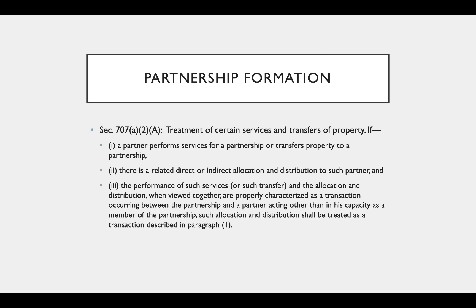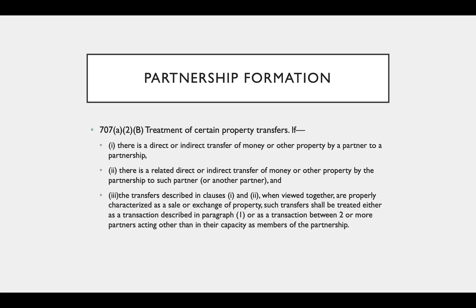Exception two is found in Section 707(a)(2)(A). The treatment of certain services and transfers of property will be taxable if a partner performs services for a partnership or transfers property to a partnership, there is a related direct or indirect allocation and distribution to such partner, and the performance of services or transfer and the allocation and distribution, when viewed together, are properly characterized as a transaction between the partnership and a partner acting other than in his or her capacity as a member of the partnership. Such transactions shall be treated as taxable.